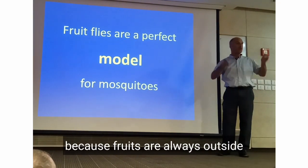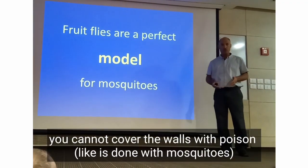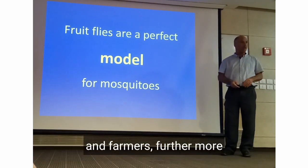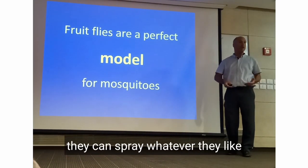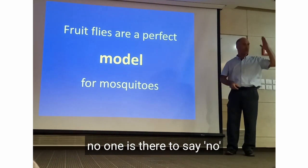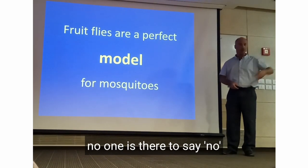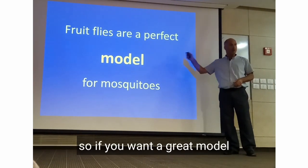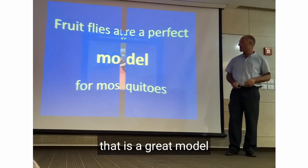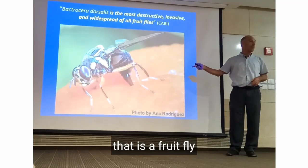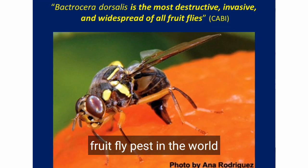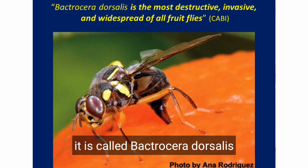Fruit flies are actually a perfect model — and not only that, it is harder, because fruits are always outside. You cannot cover the walls with poison, and farmers can spray whatever they like; no one is there to say no. So if you want a great model, that is a great model. This is the number one fruit fly pest in the world — it's called Bactrocera dorsalis.